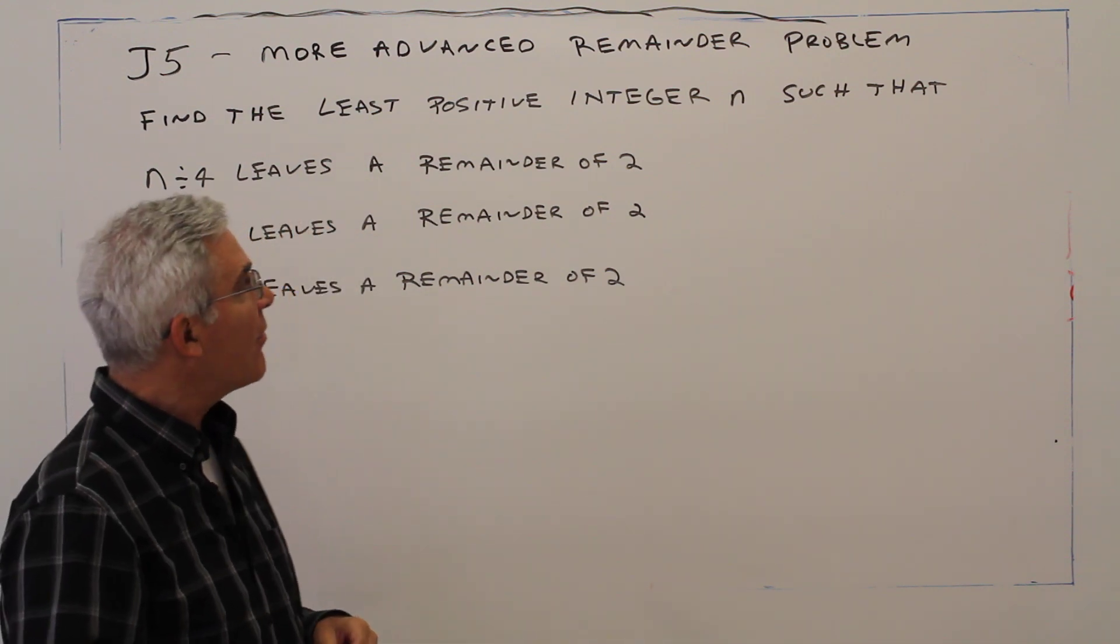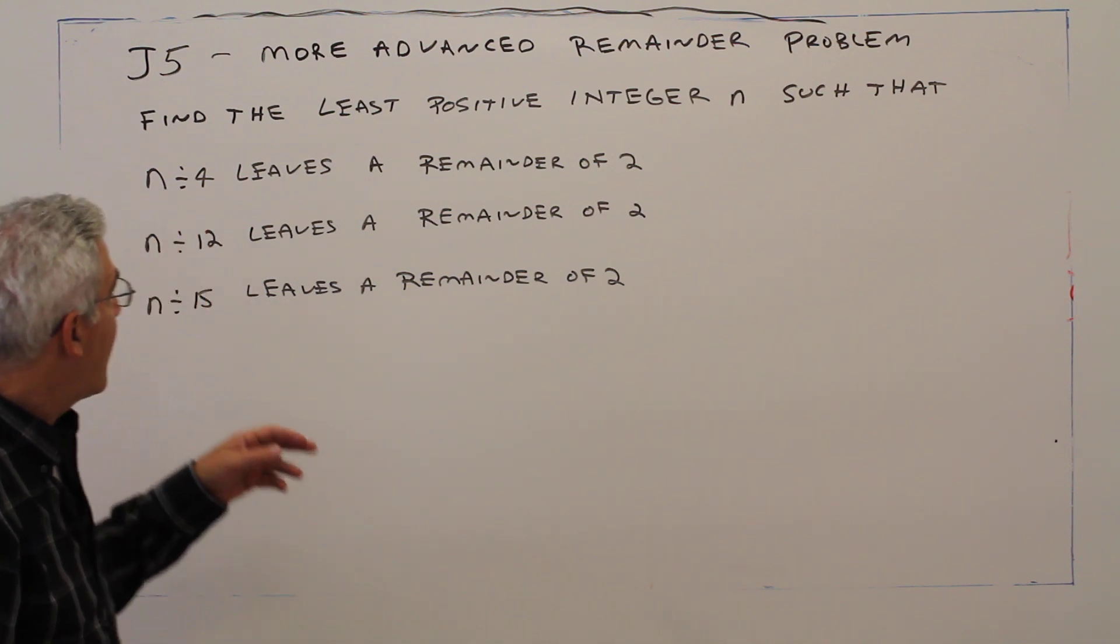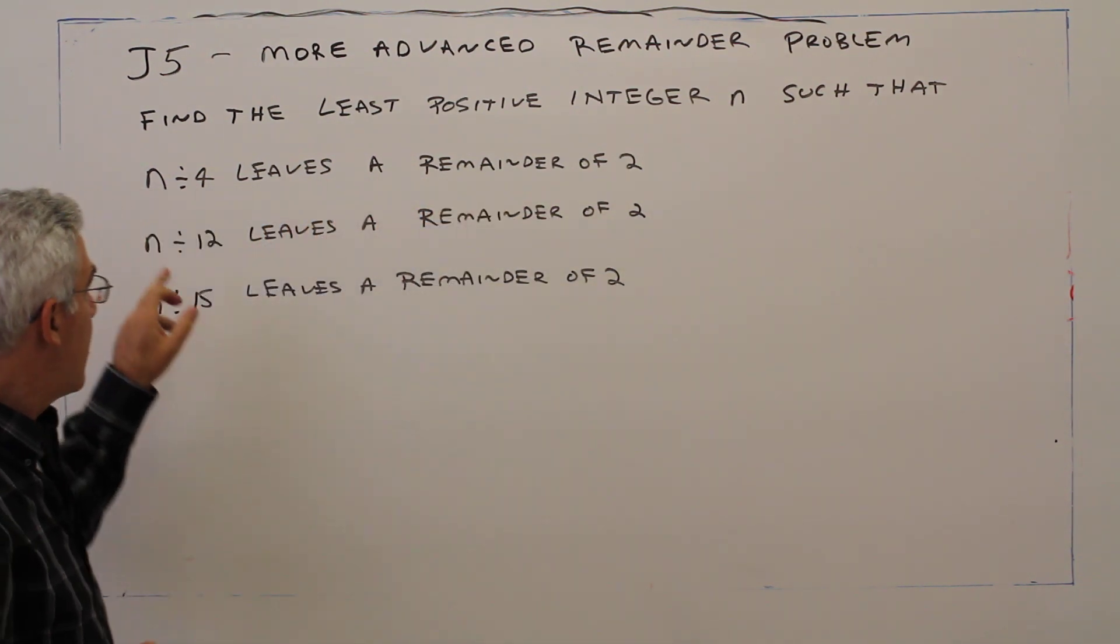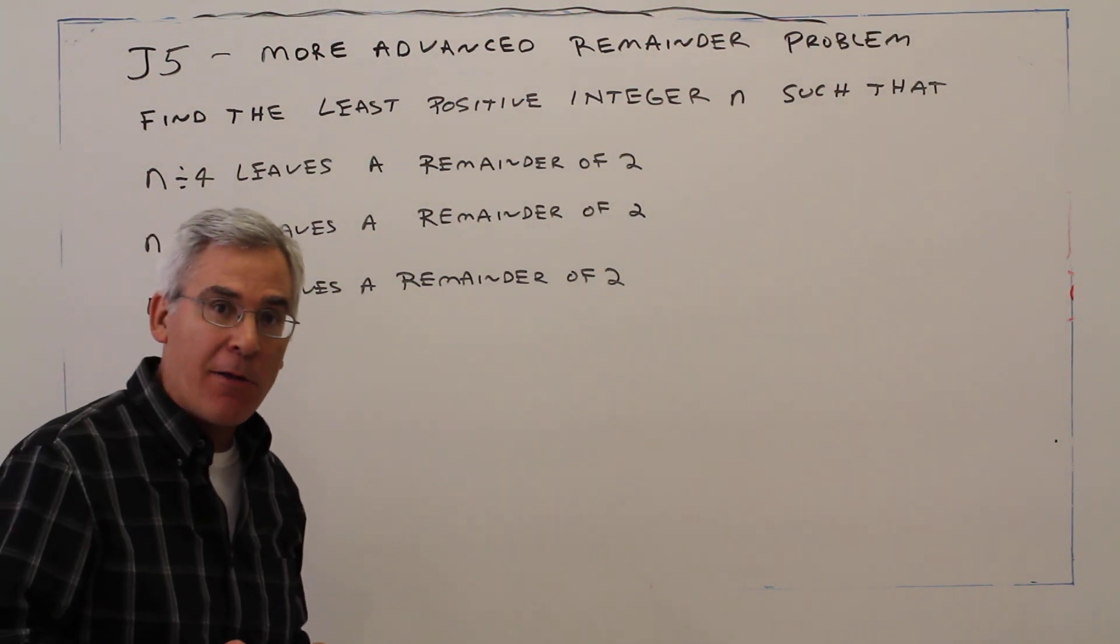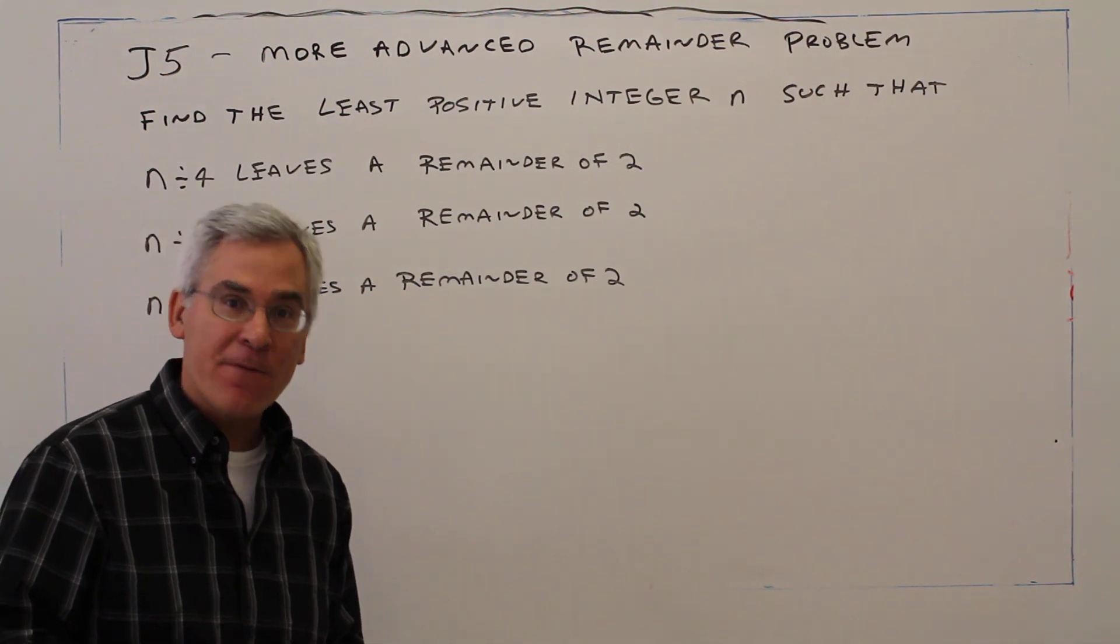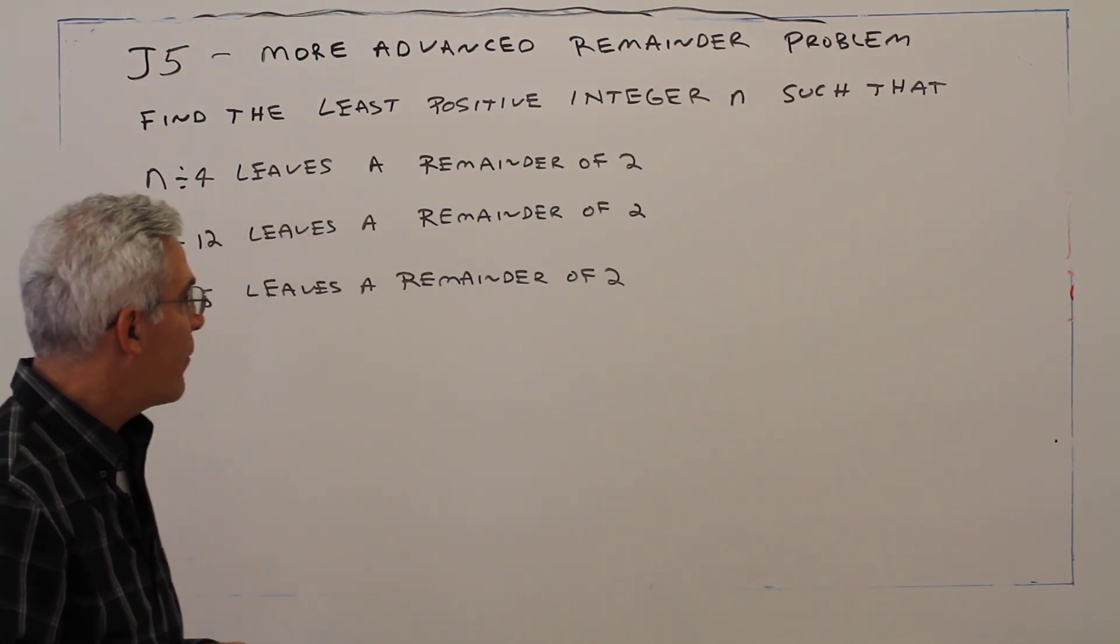Find the least positive integer n such that n divided by 4 leaves a remainder of 2, n divided by 12 leaves a remainder of 2, and n divided by 15 leaves a remainder of 2.